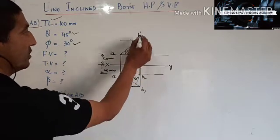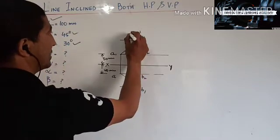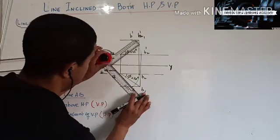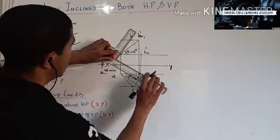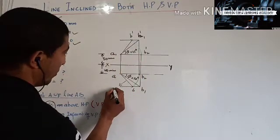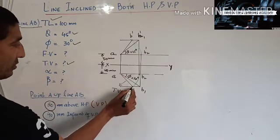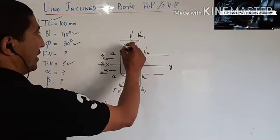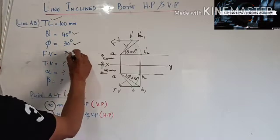The arcs cut the locus lines of B'1 and B'. Let's name them — this is my B and this is my B'. Now join these two points. This is my top view and this is my front view. I have now obtained the front view and the top view.